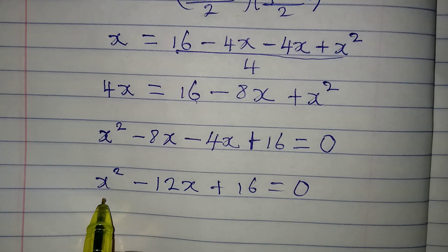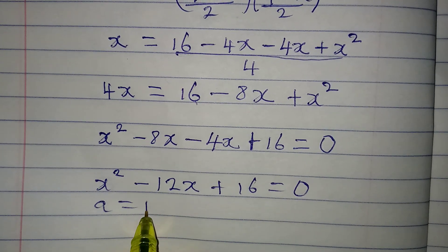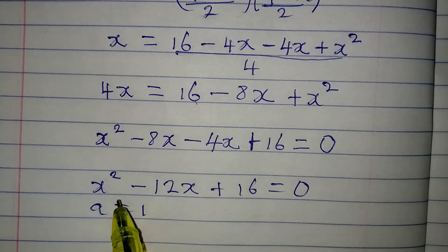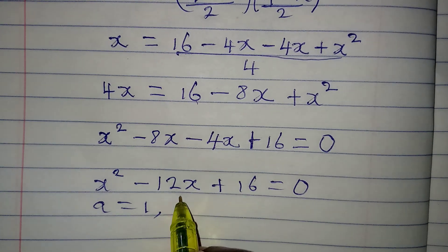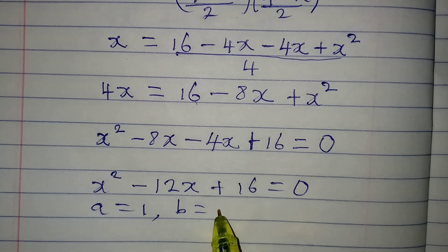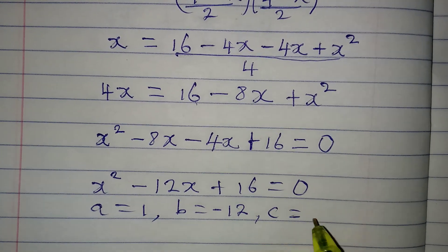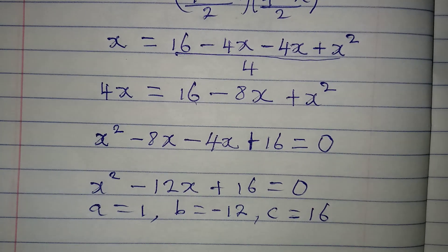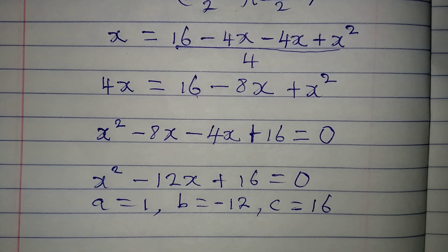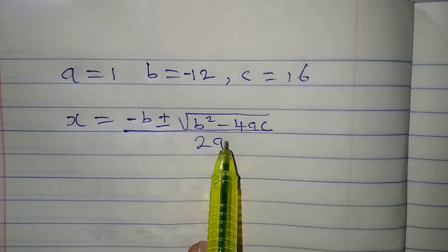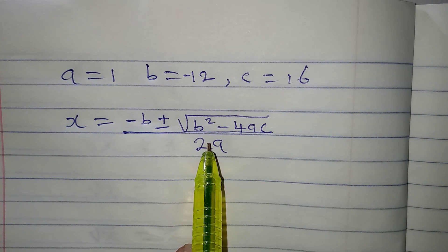We can only solve this by using the formula to do it. Our a will be 1, although you can use other methods like factorization. Our a will be 1, our b is equal to negative 12, and the c is 16. Now, what is the quadratic general formula? So this is the quadratic general formula.